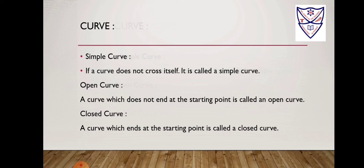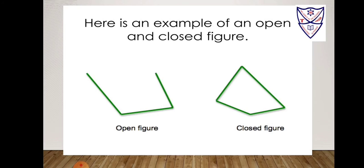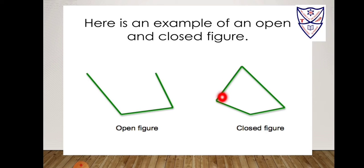Let us understand this with an example. Students, here is an example of an open and closed figure. The definition for an open figure is that a curve which does not end at the starting point is called an open curve. So here you can see this is a curve — suppose this is a starting point — and this curve does not end at the starting point. Hence, it is an open curve. Now suppose this is a closed curve. The definition is that a curve which ends at the starting point. So this is a starting point, and if we draw this, it ends at the starting point. It is called a closed curve.